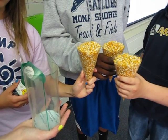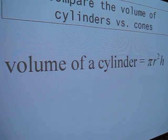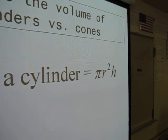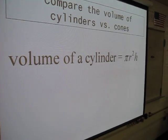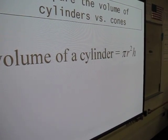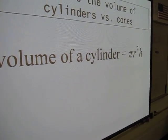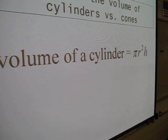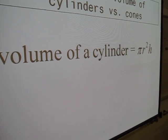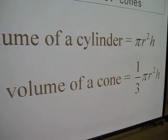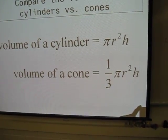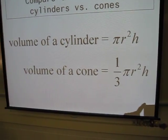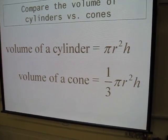Now the next question is, what are we going to do about our formula? If we are looking at our formula for the volume of a cylinder, that was pi times the radius squared times the height of that cylinder. What are we going to do for the volume of the cone then? We could fill three cones, so each one was holding a third of the volume of that cylinder. The volume of the cone is one third times pi times the radius squared times the height. That's where you get the formula for the volume of a cone from the volume of a cylinder.